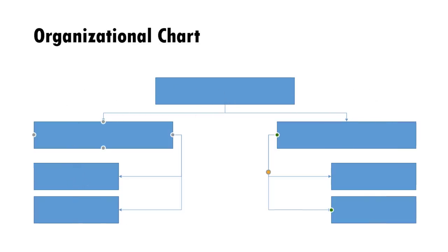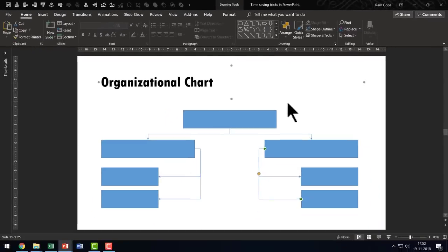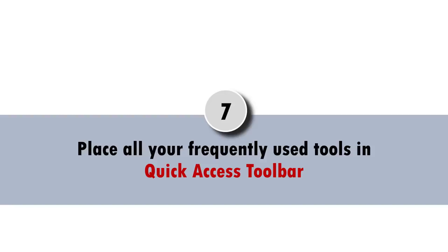Once you have finished drawing, go to the auto shapes gallery and click on the same tool again, and you reclaim your cursor back. This trick can really save you a lot of time. The seventh useful time-saving trick is to place all your frequently used tools in the Quick Access Toolbar. This is a very simple thing to do in the way I am about to suggest.